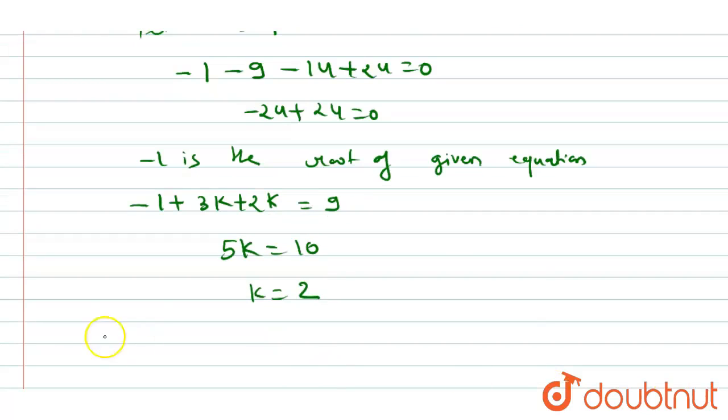So two roots are: 3k = 3 × 2 = 6, and 2k = 2 × 2 = 4.